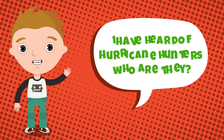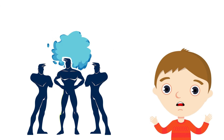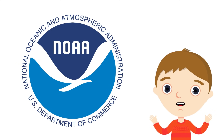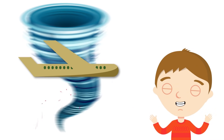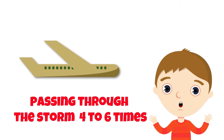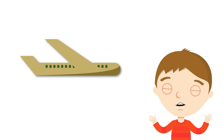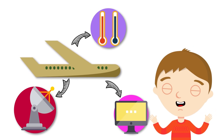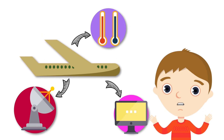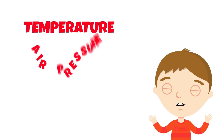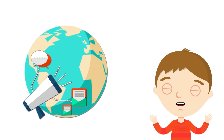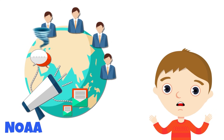I've heard of hurricane hunters — who are they? Hurricane hunters work for the National Oceanic and Atmospheric Administration, NOAA. Each mission lasts about ten hours, with the crews passing four to six times through the storm. The planes carry radar, sophisticated computers and weather instruments that determine characteristics such as temperature, air pressure, wind speed and wind direction inside the hurricane. By mission's end, NOAA can warn everyone in the hurricane's path.